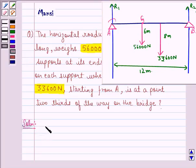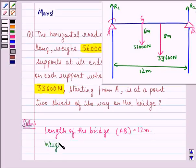Length of the bridge AB equals 12 meters. Weight of the bridge is 56,000 Newton.